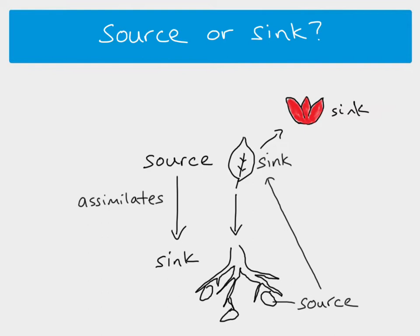Assimilates and sucrose can move in different directions in the plant — sometimes down, sometimes up, and they can move up and down at the same time. They move through phloem sieve tubes. One sieve tube will only have phloem sap moving in one direction, but if you have two phloem sieve tubes next to each other, the sap might be moving up in one and down in the other simultaneously.